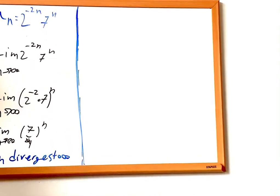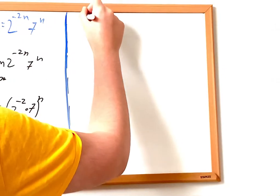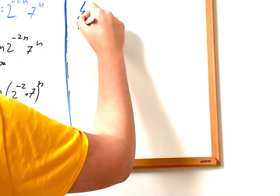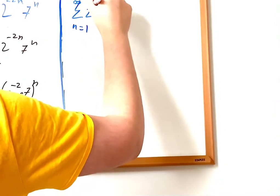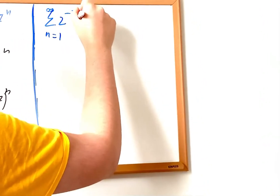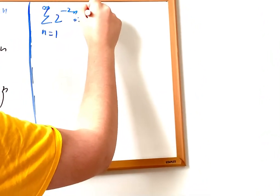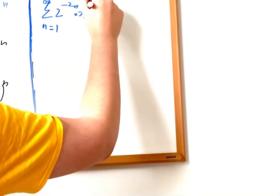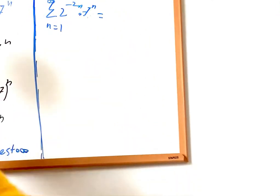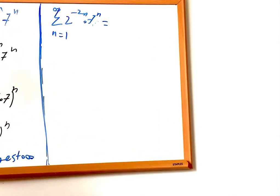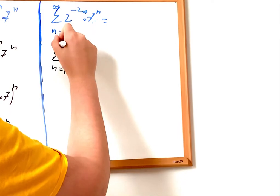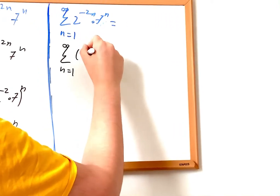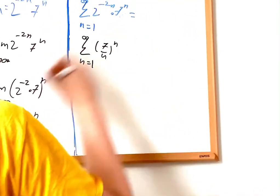So now we have done the first step. The next step is to find if the series from n equals 1 to infinity of a sub n, which is 2 to the power of negative 2n multiplied by 7 to the power of n, diverges or converges. So first, I should simplify this. So I get the sum from n equals 1 to infinity of 7 over 4 to the power of n.